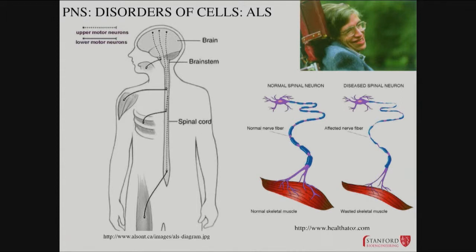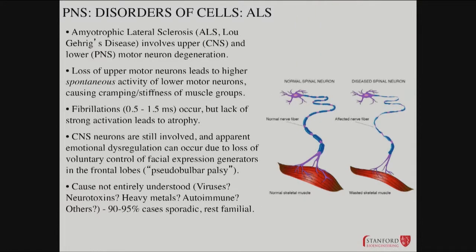Lower motor neurons are also dysregulated — they're both weak and inappropriately active. You end up getting diseased or defective spinal neurons that start to lose their efficacy of connection with the muscle. They withdraw and pull back some of the presynaptic terminals. You also get loss of upper motor neurons. Early signs include fibrillations — rapid, pulsatile contractions of small muscles — which you can experience in upper limbs, lower limbs, or eyelids.